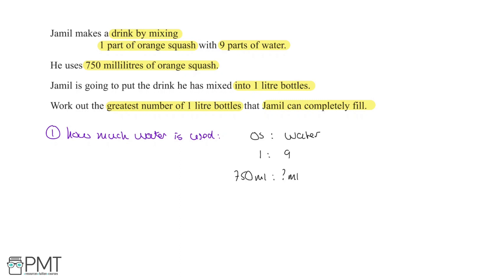To get from one part to 750, you multiply by 750. Which means we need to multiply nine parts by 750 to find how many millilitres of water he uses. So this question mark equals nine times 750 millilitres.